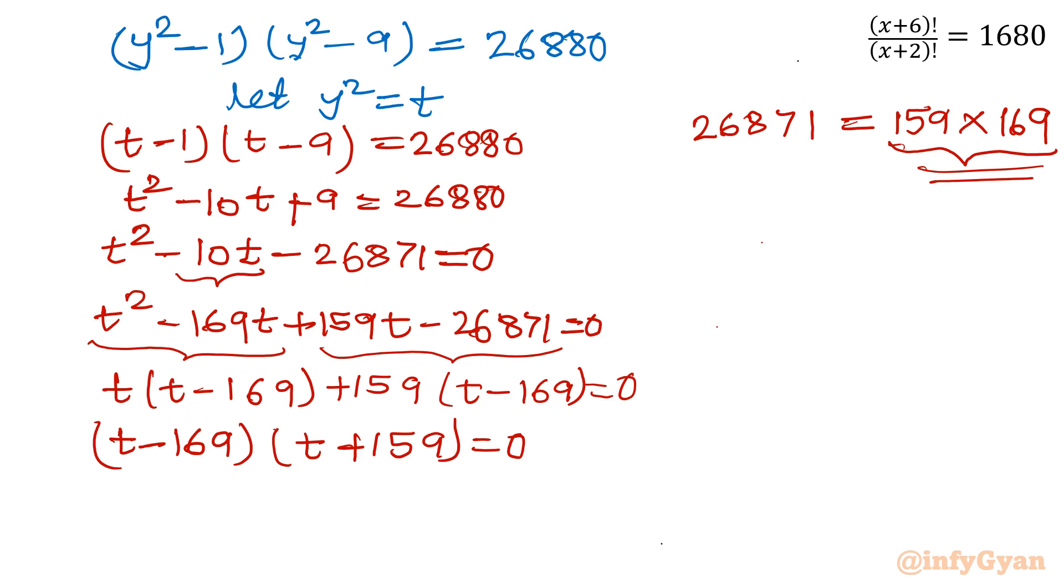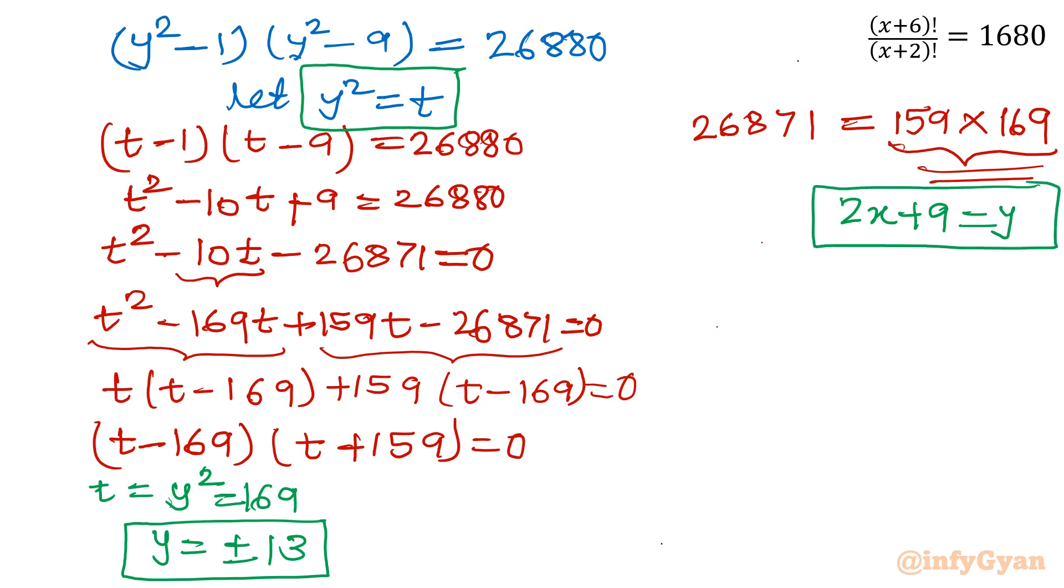Now I will write t, because of product form. So I can write t is equal to what? t is y². Equal to y² equal to 169. So from here I can write y equal to plus minus 13. Remember what was our y? 2x+9 equal to y. This was our substitution, don't forget. Now come to second bracket t+159, so I will write t, what was t? y² is still there, equal to minus 159. And y² is negative, complex solution is about to come so we will reject this. So we can write here rejected.